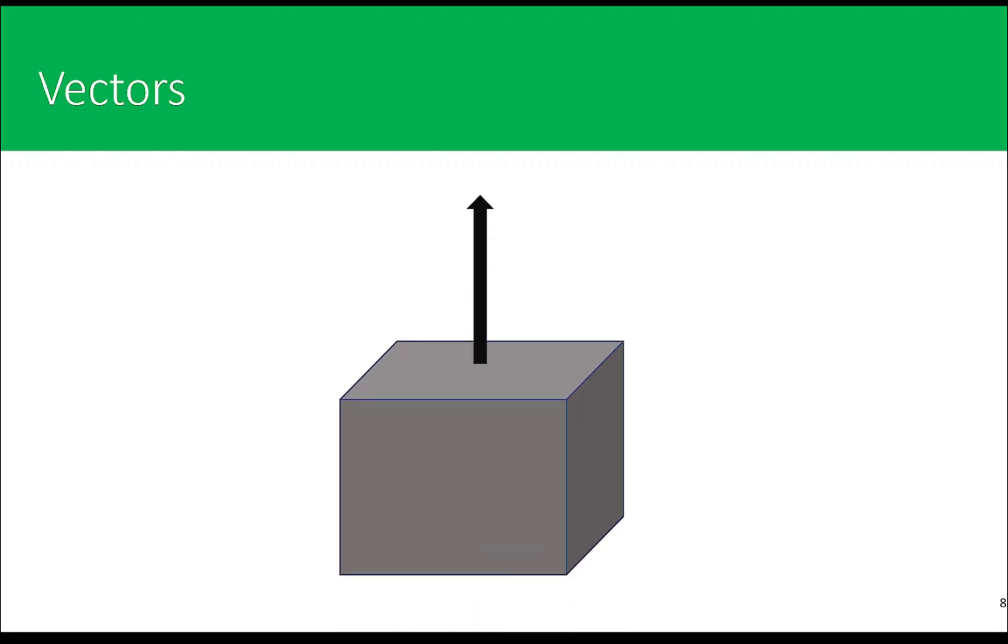But vectors can represent other things as well, such as an area. The length of the vector is proportional to the amount of area, the number of square meters, and then you make the direction of the arrow perpendicular to the surface. So in this way, this can represent an area as well.